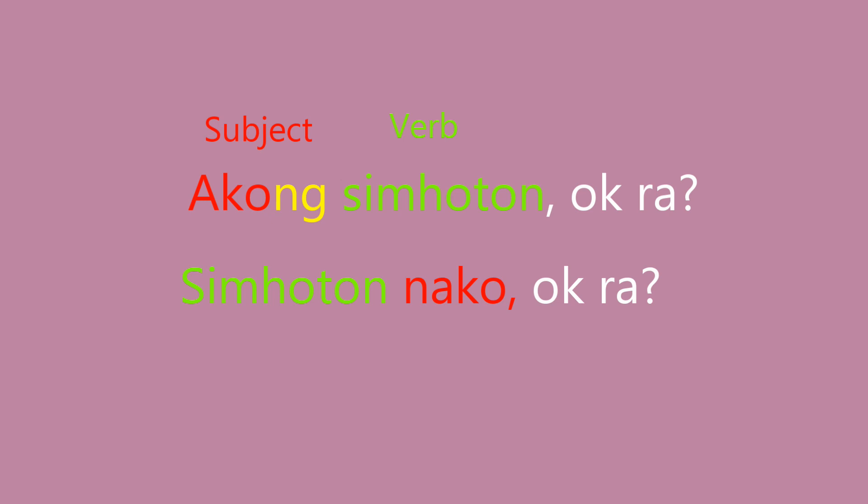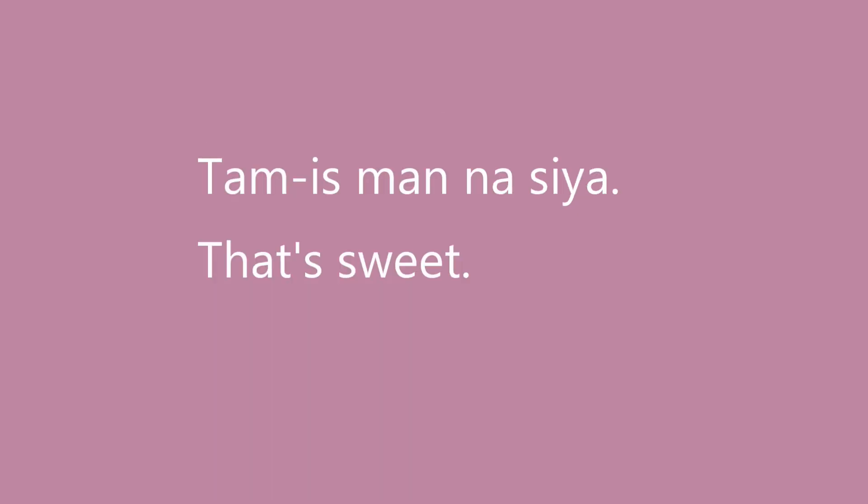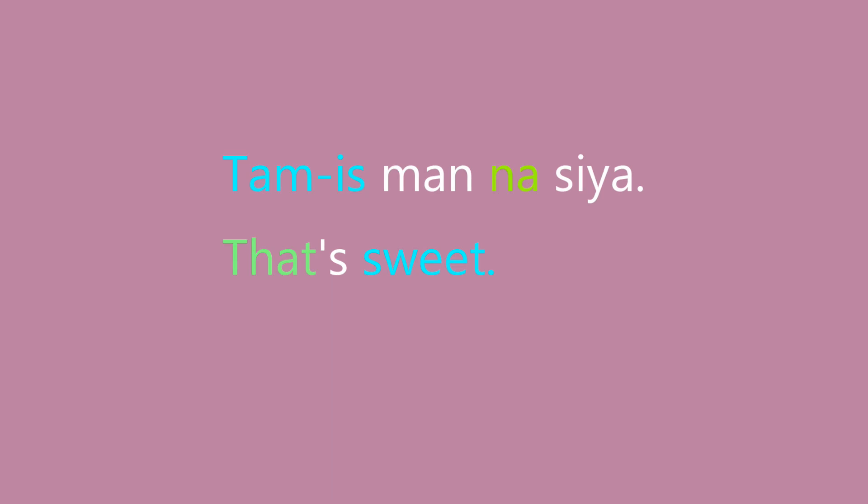Now, next, kuya answered: 'Tam-is manak siya' — that means 'that's sweet.' 'Tam-is' means sweet, and 'man' here is acting like an emphasis. Kuya is a seller, a vendor, trying to sell something, so he uses 'man' to give emphasis to what he's saying. The 'na' means 'that,' and 'siya' — he's actually referring to the mangoes or the fruits he is selling. So the context is: those fruits on my table that I'm selling are actually sweet. With 'man' here, it also sounds more polite.